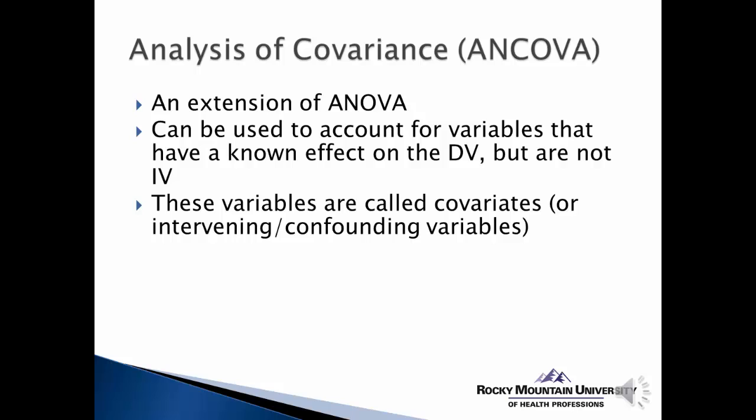These variables are referred to typically as covariates — they provide additional variation in the subject response that we want to try to control. That's why we call them covariates. You'll often hear them referred to as intervening or confounding variables — those are all synonyms for each other.